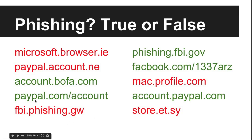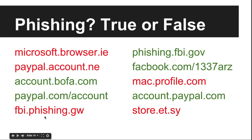Similarly, paypal.account.ie — .ie is the top-level domain for Ireland, 'account' is the domain name, and 'paypal' is just a subdomain. The subdomain could be anything. Now, account.bofa.com could be perfectly fine — bofa.com is Bank of America's domain name. Likewise, paypal.com/account is legitimate. But fbi.phishing.gw is bad — 'gw' is a foreign top-level domain, 'phishing' is the domain, and 'fbi' is just the subdomain. The actual FBI site would be something like phishing.fbi.gov.